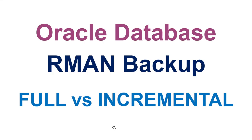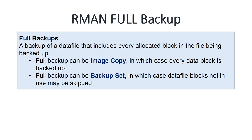Hello, in this tutorial we will learn about full versus incremental backups in RMAN. An RMAN full backup is a backup of a data file that includes every allocated block in the file being backed up. A full backup can be an image copy, in which case every data block is backed up, or it can be a backup set, in which case data file blocks not in use may be skipped.